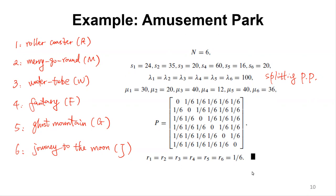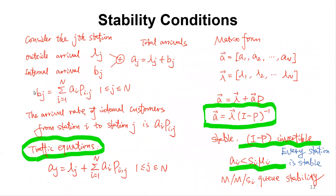Those values will help us calculate the properties of the network of queues. Let's look at the stability condition. Consider station J: outside arrival lambda_J, internal arrival b_J, so total arrivals to station J is lambda_J plus b_J. The internal arrivals b_J come from other stations: a_I times P_ij, summed over all stations I. This is the total internal arrival rate to station J.